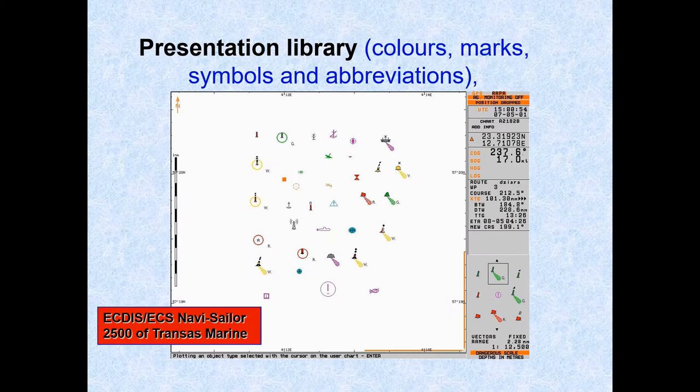The presentation model for the ECDIS is actually built from two major parts. One is the presentation library, which is a library of colors, line styles, fill styles, point symbols, and a set of symbology instructions and lookup tables for the translation of the object descriptions into the symbology instructions.